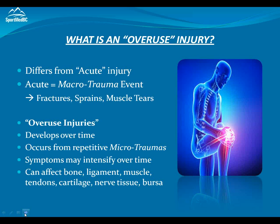Our overuse injuries are injuries that occur over time. As we exercise, our body goes through repetitive micro-traumas, and this can come in the form of weight training, running, or sport, but essentially our symptoms will arise or intensify over time. This can affect our bone, ligaments, muscles, tendons, cartilage, nerve tissue, and our bursa. A lot of the tissue in our body can be affected by overuse — the difference is that these are micro-traumas, just repetitive wear and tear and strain on these tissues.